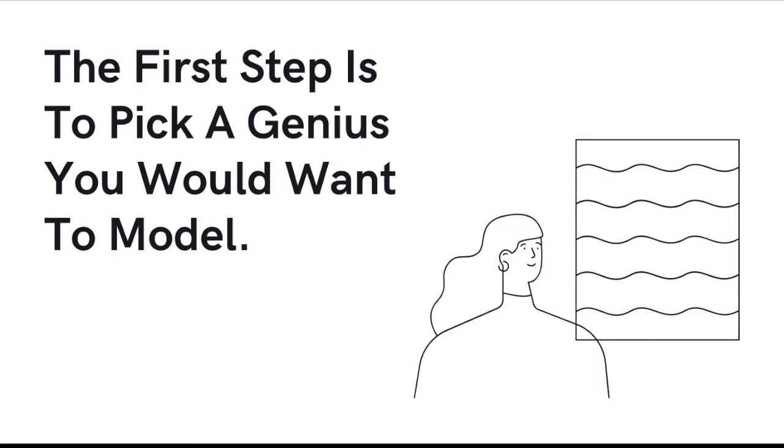The first step is to pick that person, pick a genius you would want to model and make sure you pick someone who you can actually know a bit about their lives, whether you pick Tony Robbins or Elon Musk or Bill Gates or your dad or myself. Pick somebody that you can at least know a bit about their lifestyle and their habits and their success. If you pick somebody from three, four hundred years ago in history that inspired you a lot, but you can't really know a lot about them, it's hard to model them in that sense. So pick someone you can actually explore their habits and their emotions and their success in life.